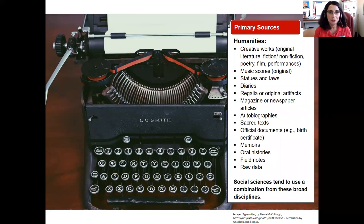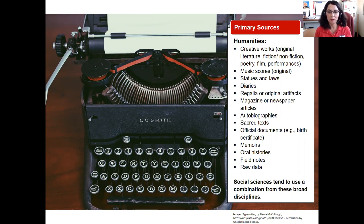For the humanities, creative works are the primary source — original literature, fiction, nonfiction, poetry, film, and performances. Music scores, statutes and laws, diaries, autobiographies, original artifacts, paintings, magazine and newspaper articles, and sacred texts are all considered primary sources. Official documents like birth certificates or deeds may also be primary sources, along with oral history, field notes, and raw data. For business and social sciences, disciplines tend to use a combination from both the humanities and sciences categories.